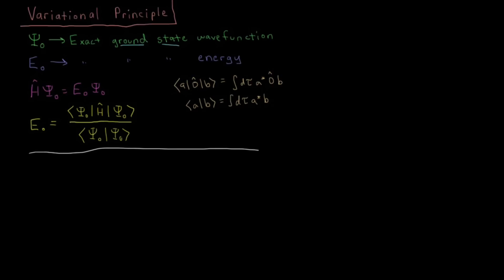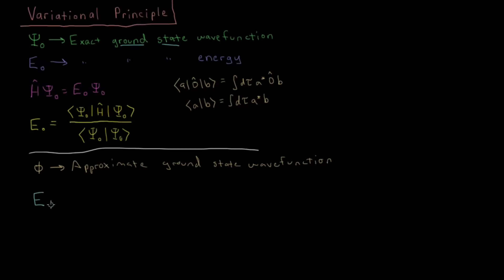Now we look at the case where we have some approximate wave function phi — an approximate ground state wave function. This phi is going to have some energy as well. Its expectation value is given by a similar integral: the integral of phi-star H phi divided by the normalization integral of phi-star phi over the entire range of that function.